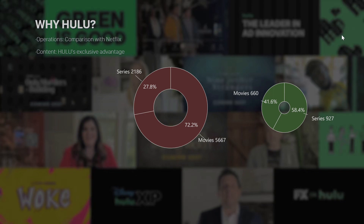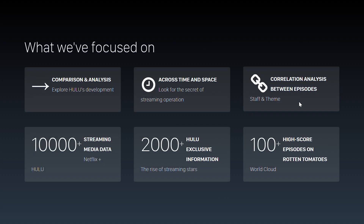A friendly reminder: all charts about Netflix are in red while Hulu is in green. For example, in the two ring charts below, the larger red one indicates the number and percentage of movies and TV shows on Netflix, while the green one represents Hulu.